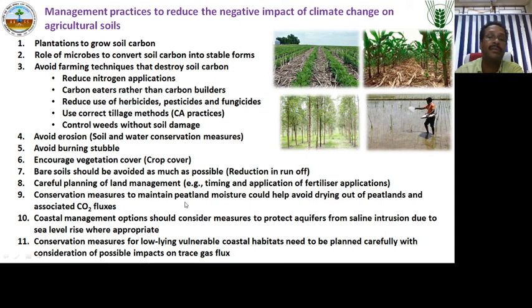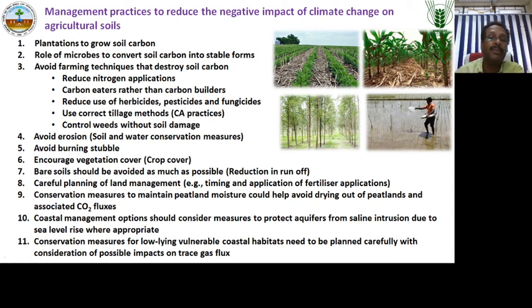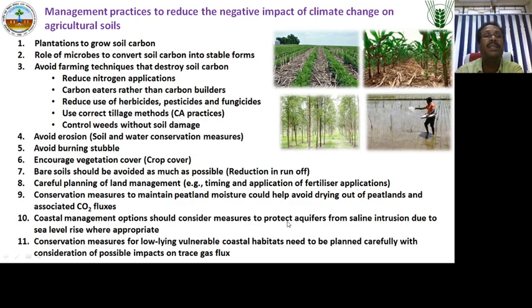Conservation management practices store more carbon in the soil. Encouraging vegetation cover builds up more carbon and helps reduce temperature. Careful planning and timely application of fertilizers — considering whether soils are arable or non-arable, and whether to use placement or broadcasting — are important. Conservation measures to maintain peatland moisture are needed, as peatlands may decompose and release carbon dioxide to the atmosphere when dry. Coastal management options and conservation of low-lying coastal habitats need to be planned carefully considering gas flux and potential pressure impacts.